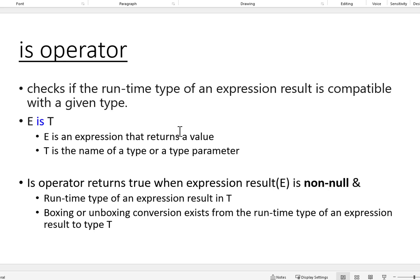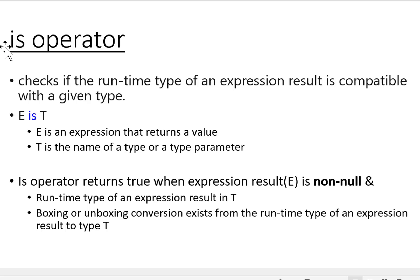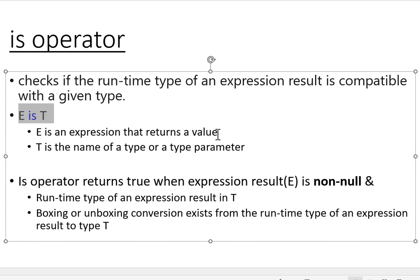The `is` operator checks whether the runtime type of an expression is compatible with a given type — for example, whether a value is of type `int` or `double`. The syntax is `e is T`, where `e` is the expression that returns a value (it could return `double`, `int`, `string`, or even an object), and `T` is the name of the type or type parameter. So `is` operator is used to test whether a value is of a given type.